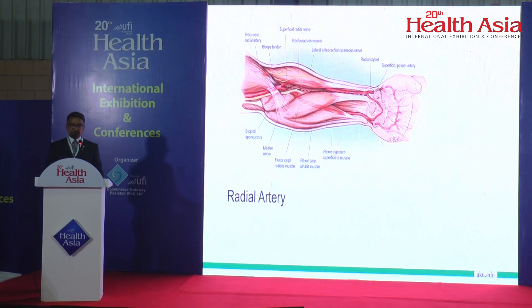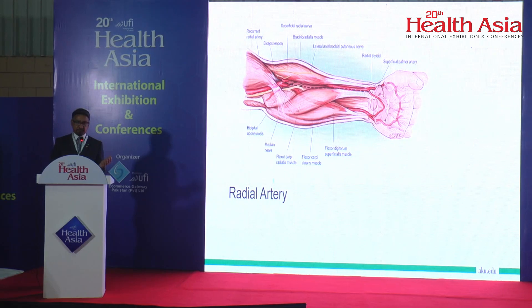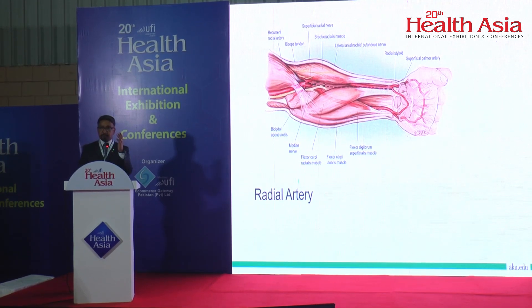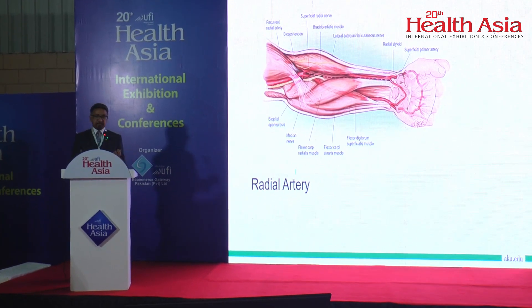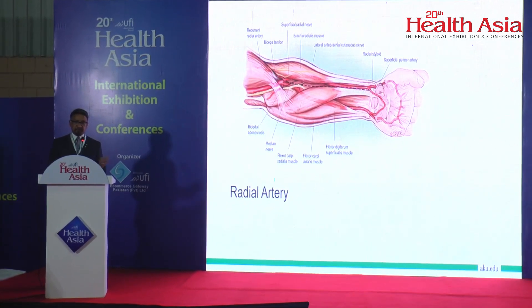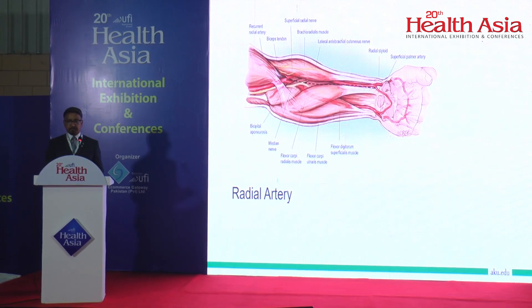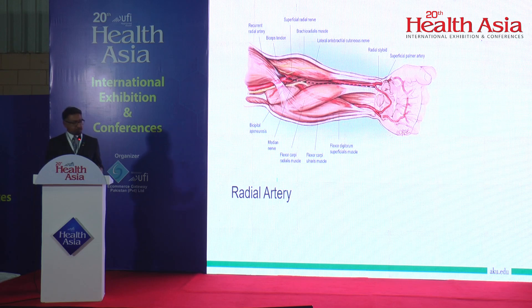For the radial artery, we use the non-dominant arm. The first thing to do is the Allen's test — to determine whether the ulnar artery is also supplying the palm. You press both arteries, release one at a time, and check whether the palmar arches fill with blood, or use a plethysmograph with a blood saturation monitor.